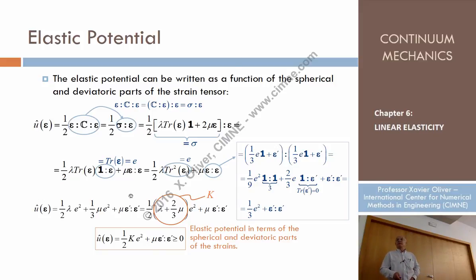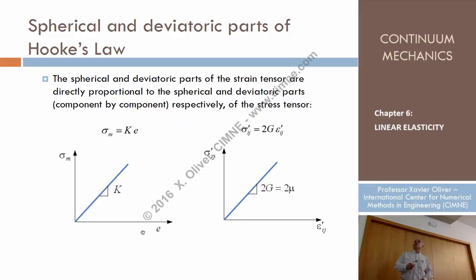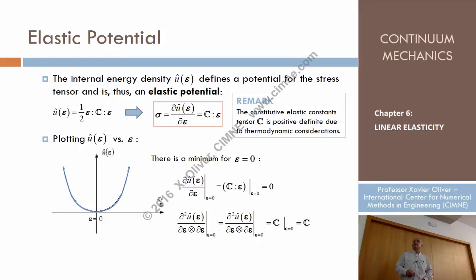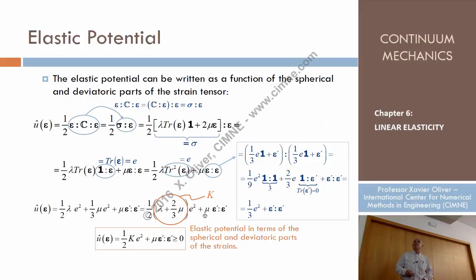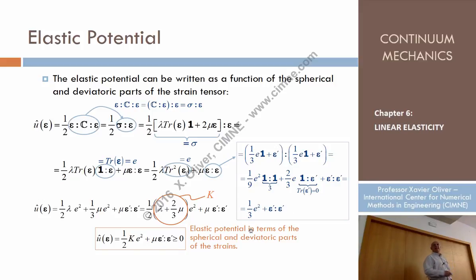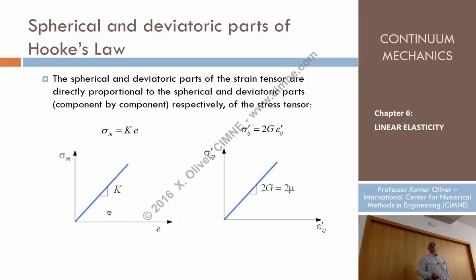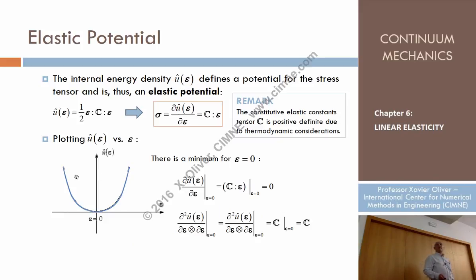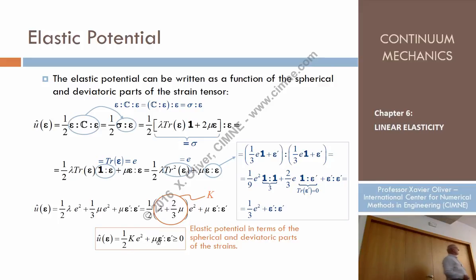This is just an algebraic operation. In virtue of this decomposition, there is a clear relation involving K and G (where μ = G). This is an alternative expression for the elastic potential in terms of K and μ. Since this energy is always positive for any nonzero strains, this positivity condition says something about the required values of K and μ.